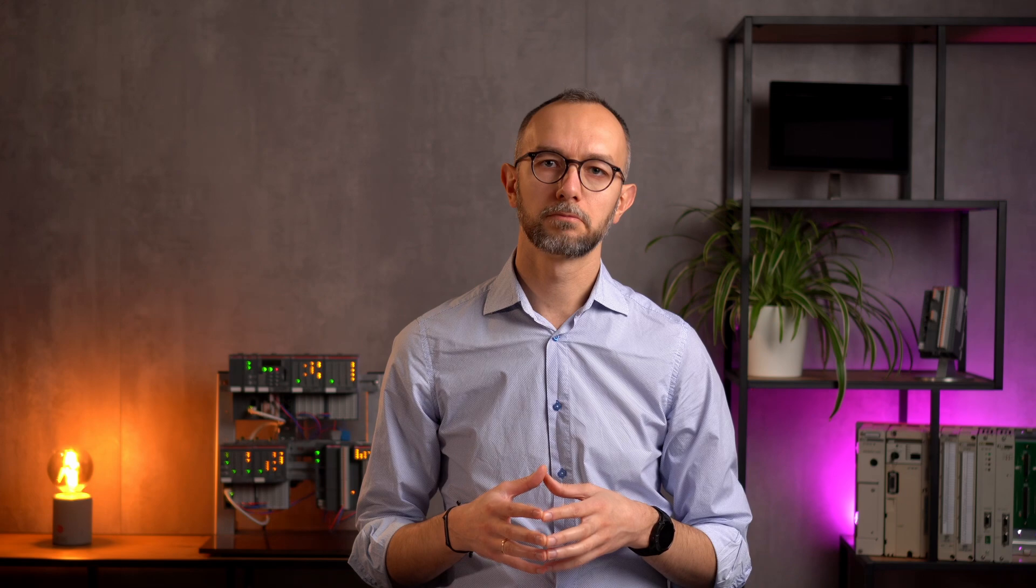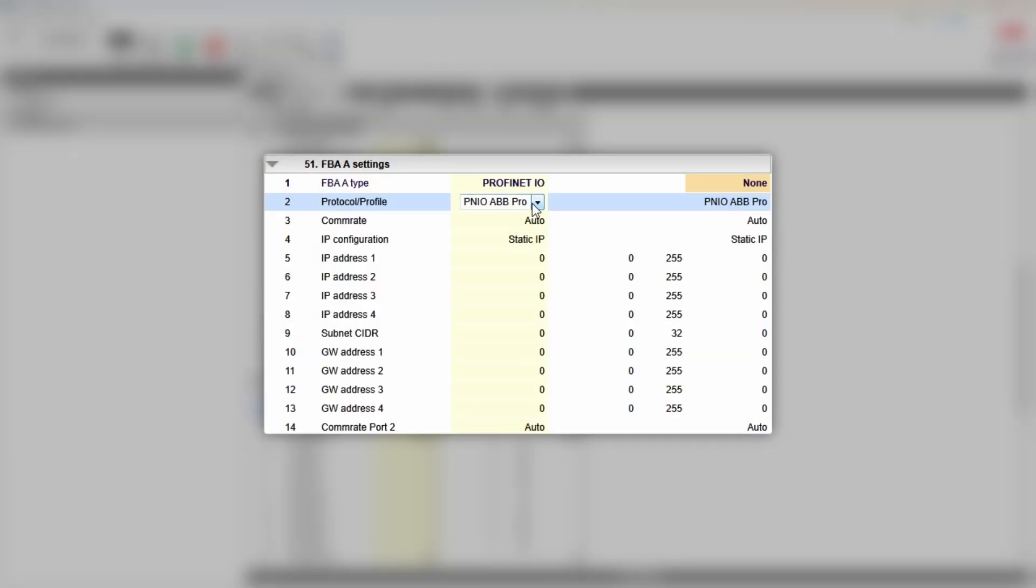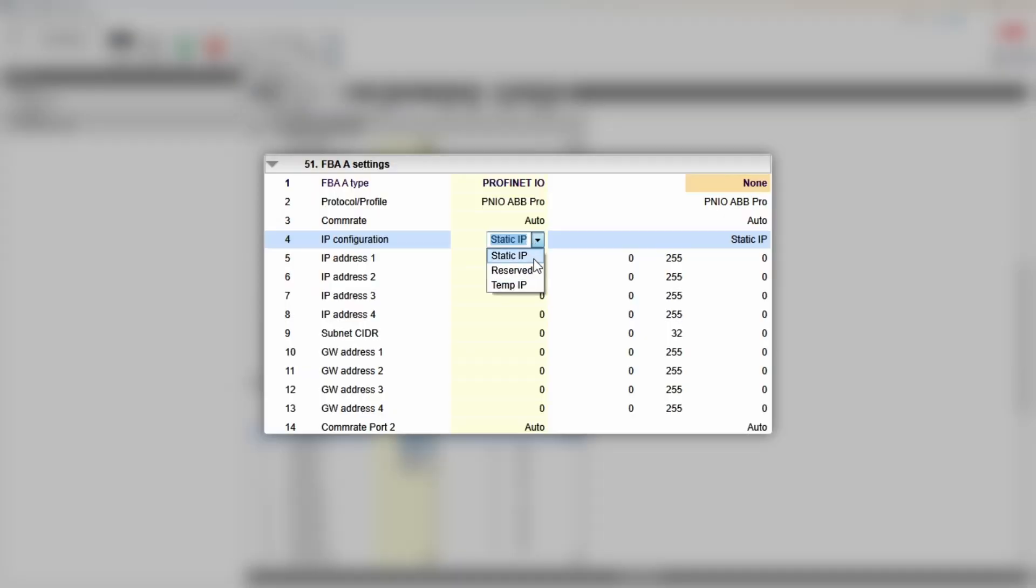Next go to group 51. You can't change the fieldbus adapter type—it's ProfiNet.IO profile. It's quite a big topic to cover and we'll get back to it. For now just select ABB profile. Now IP settings—you may leave it static and set IP address, mask, and gateway manually, but I prefer to send these settings from the PLC side the same way we did with the CI 501 module.